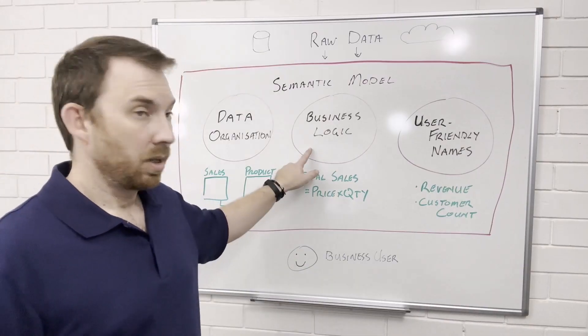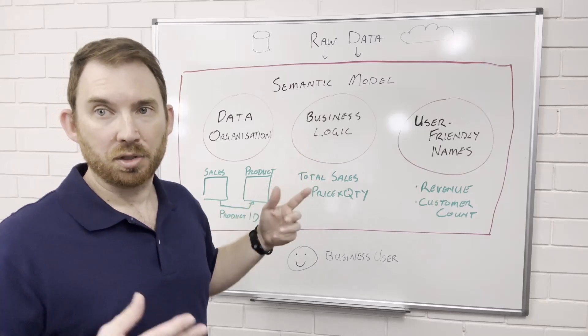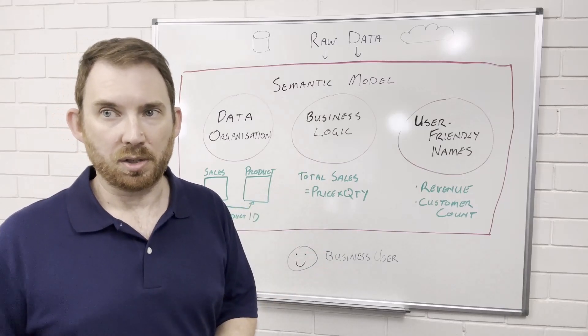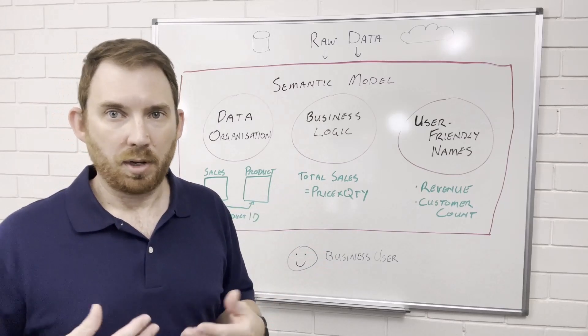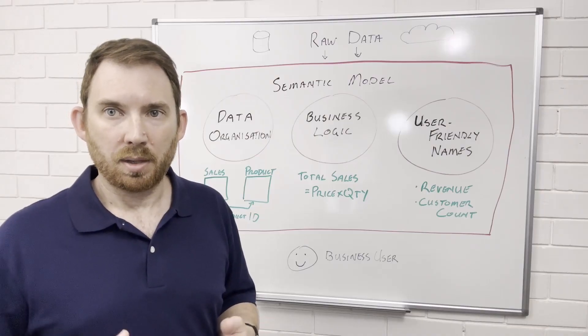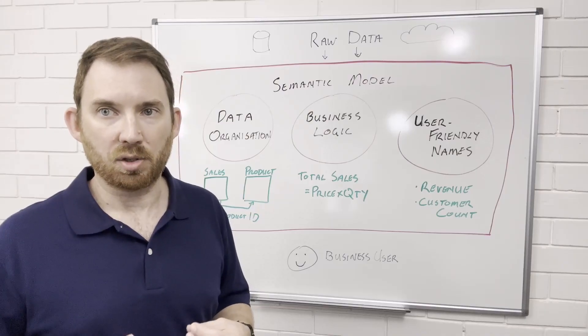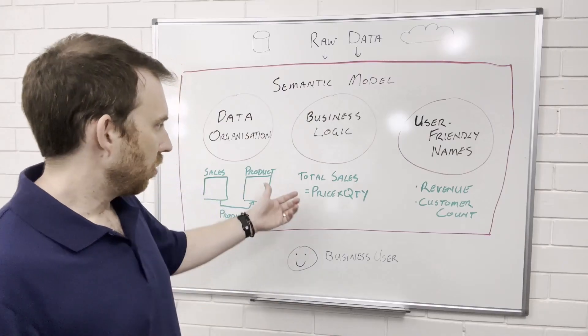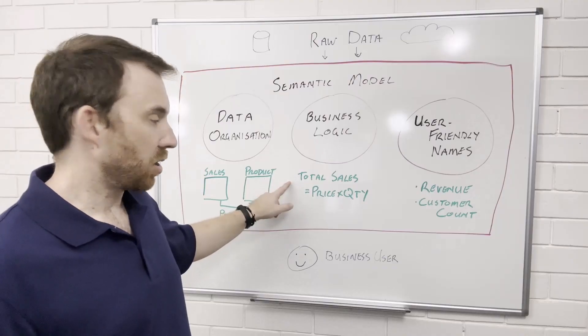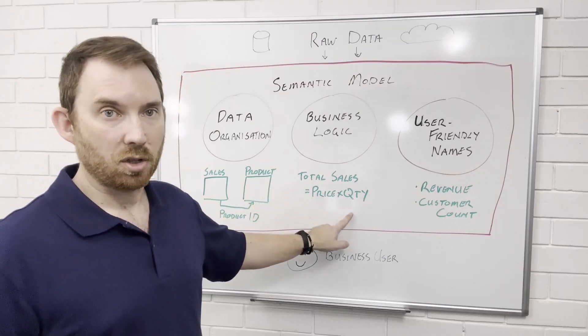Next we have business logic. This includes pre-built metrics and calculations like total revenue and average profit. These metrics are consistent, so there's no guessing or manual work every time you analyze your data. We can define measures like total sales equals price times quantity.